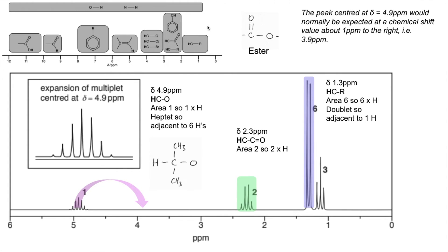Area is 2, so there's 2 hydrogens in the environment. But it's a quartet, so it must be adjacent to 3 hydrogens, in other words a CH3 group. So that part of the molecule is looking like that. These are causing that peak, and this is what's adjacent to it.